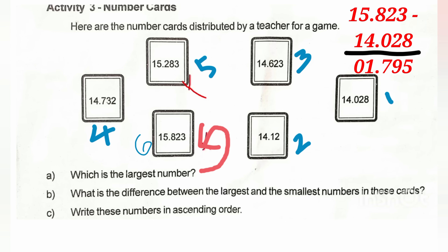Subtracting the smallest from the largest: 15.823 minus 2.823. We align the decimal points and subtract carefully. The answer comes to approximately 13 units difference. Now write these numbers in ascending order: 14.082, 14.12, 14.623, 14.732, 15.283, and 15.823. In descending order, reverse the sequence.